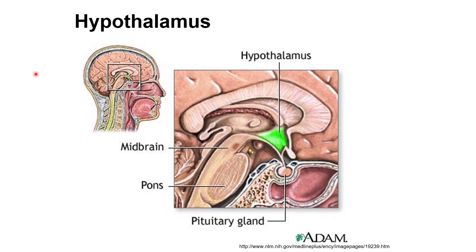Just below the thalamus in the forebrain is another structure called the hypothalamus — the name comes from it being located just below the thalamus. This structure, shown in green, is located close to the midbrain and pons and is involved in similar autonomic functions. It controls regulation of hunger, thirst, maintenance of body temperature, the fight-or-flight mechanism, mating behaviors, and so on.